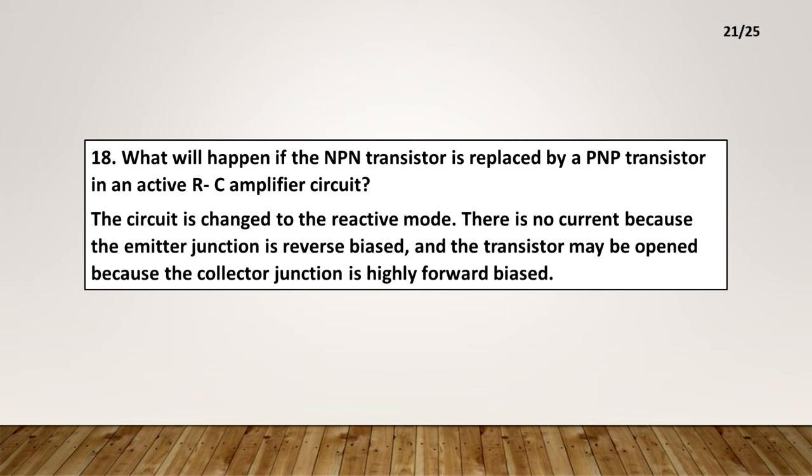The circuit is changed to the reactive mode. There is no current because the emitter junction is reverse biased and the transistor may be opened because the collector junction is highly forward biased.